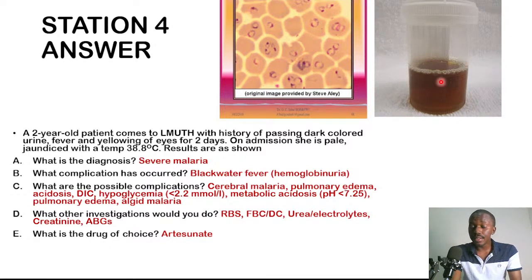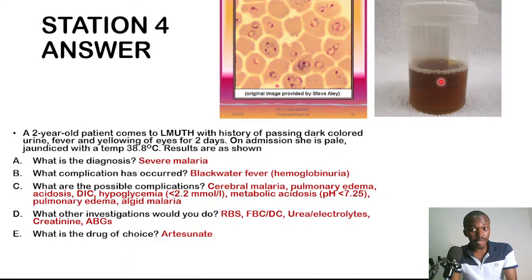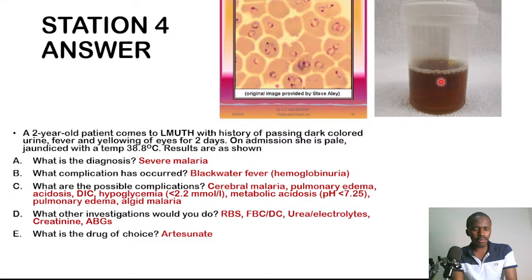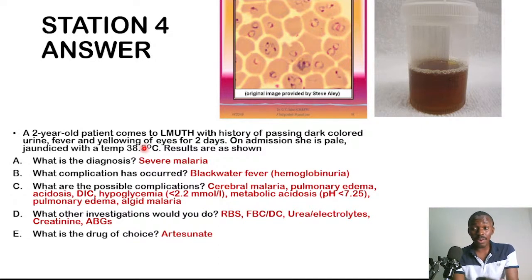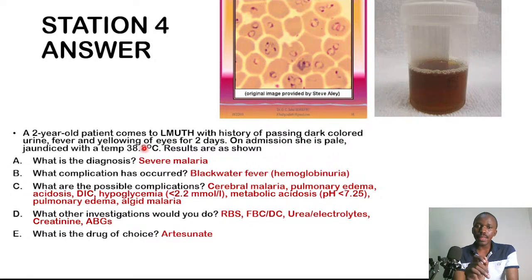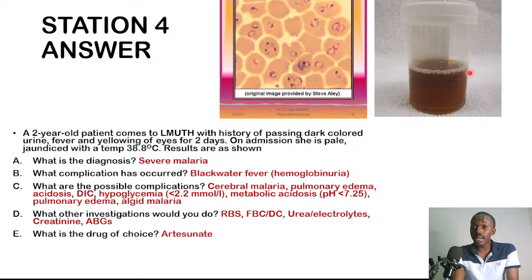This is severe malaria. The child is passing dark urine due to hemoglobinuria — hemoglobin darkens the urine. Conjugated bilirubin can also darken urine, as seen in obstructive jaundice. The child is jaundiced — in adults jaundice is a feature of severe malaria; in children it is debated. The child is pale, indicating anemia. The complication that has arisen is blackwater fever (hemoglobinuria).